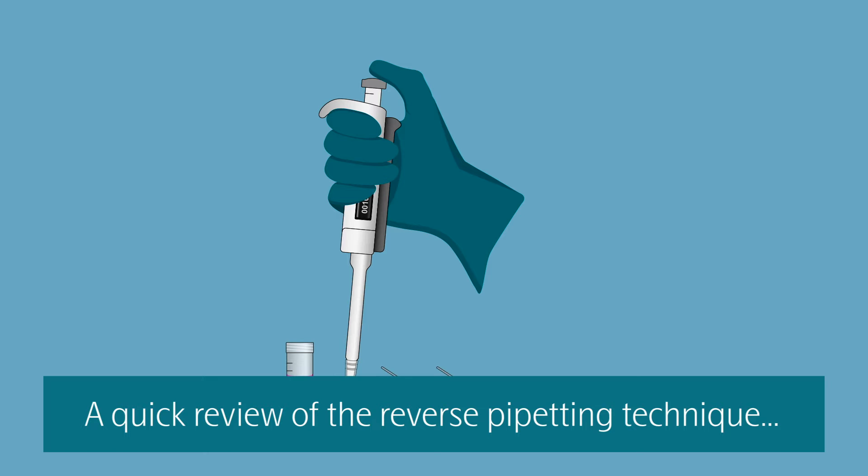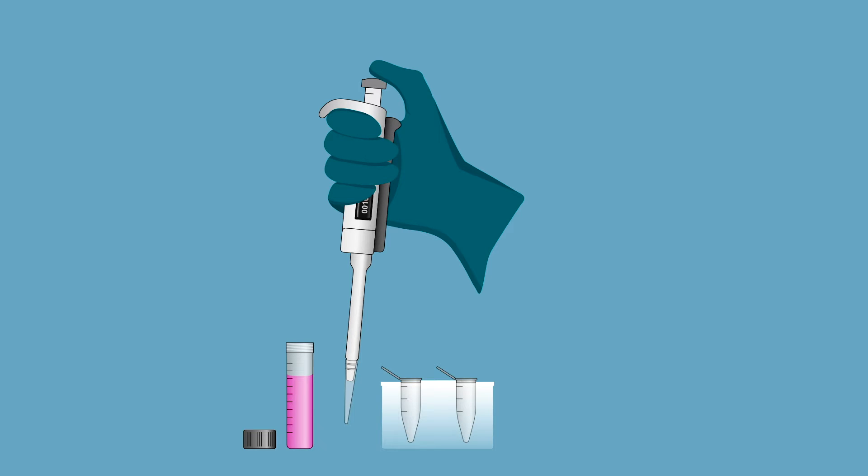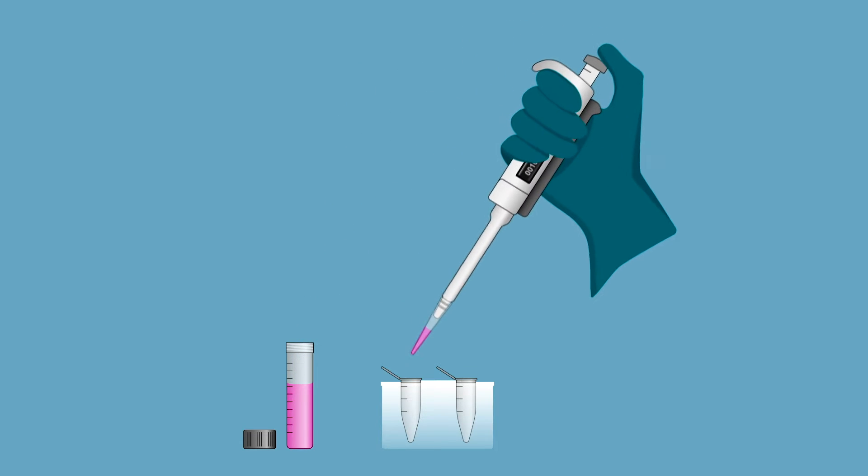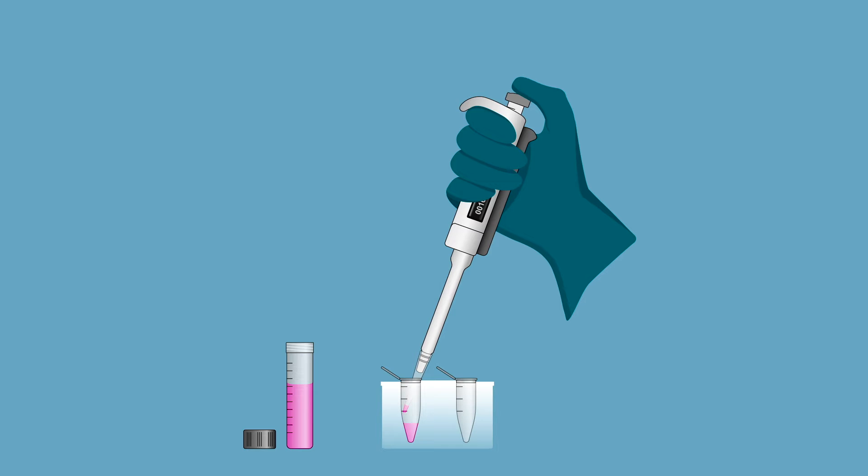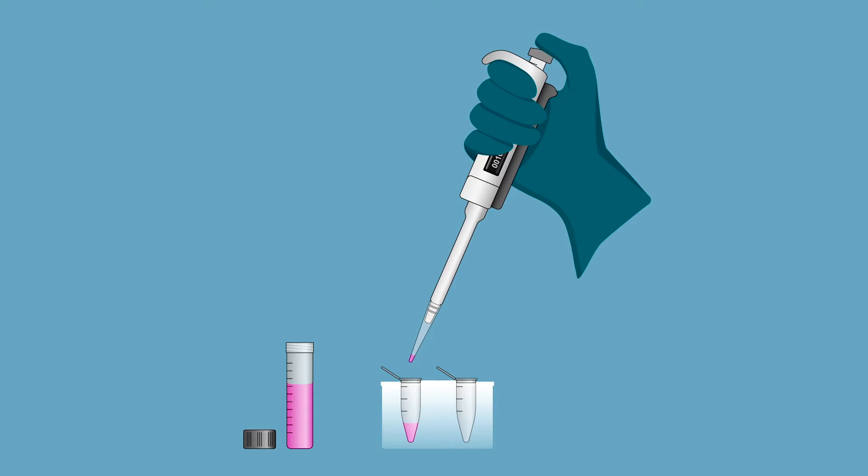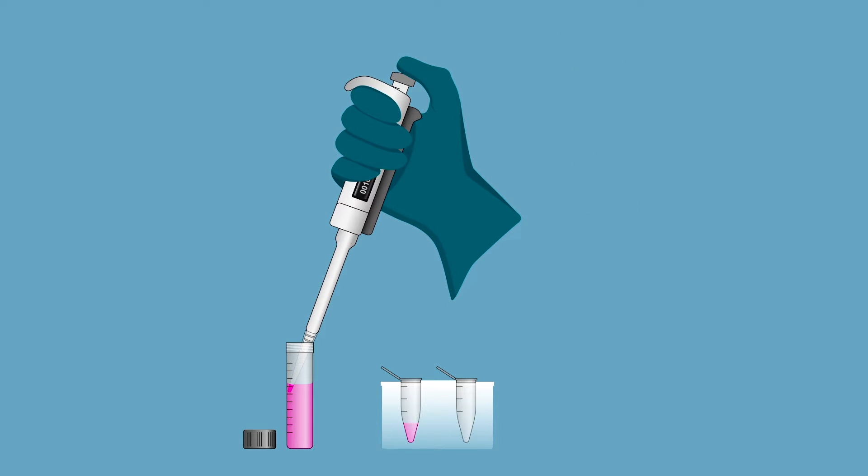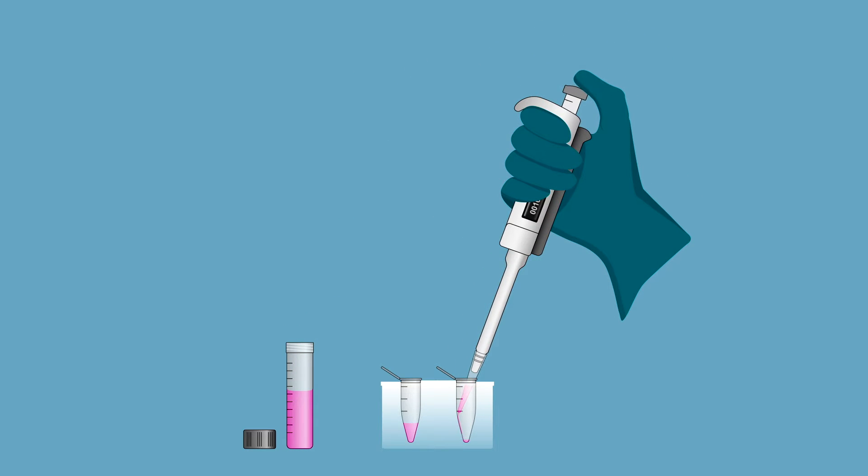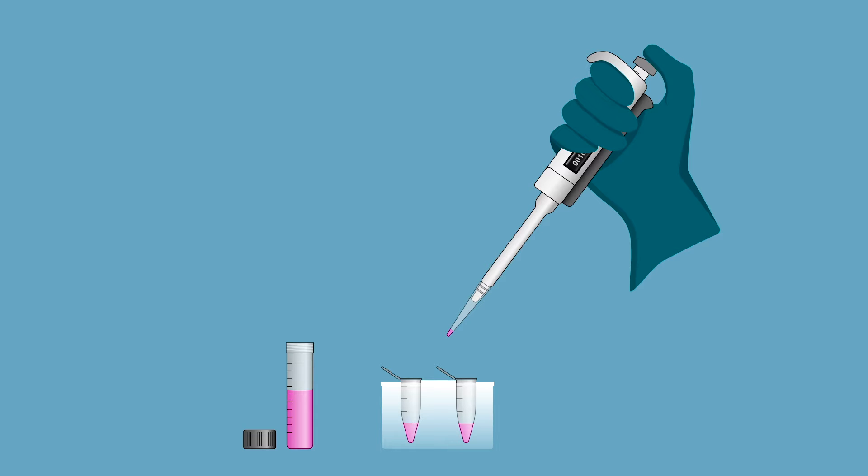In some steps of the protocol, reverse pipetting should be used. Unlike for regular forward pipetting, before aspirating your liquid, push your plunger just past the first stop. Immerse your pipette tip into your liquid, just below the liquid surface. Slowly release your plunger all the way up. When dispensing your liquid, press down just until the first stop. A small volume will be left in your pipette tip. If using the same pipette tip to transfer your liquid to another well, keep your plunger pressed down to the first stop until you put the pipette tip back down in the liquid and slowly release your plunger all the way up. Repeat as necessary. The small volume left in your pipette tip can be discarded once the pipetting is done.